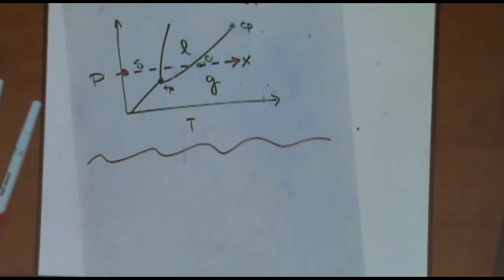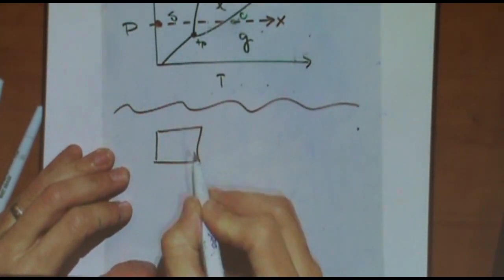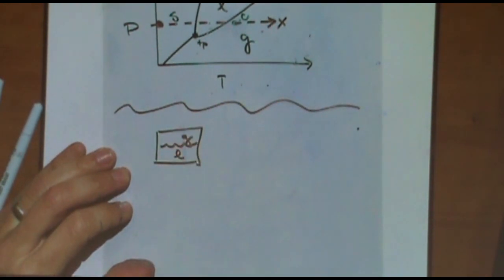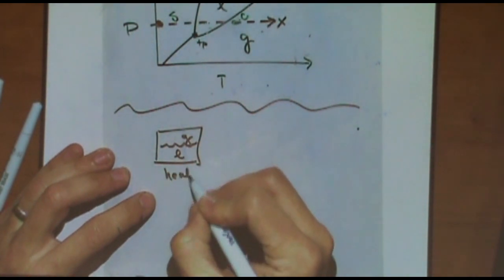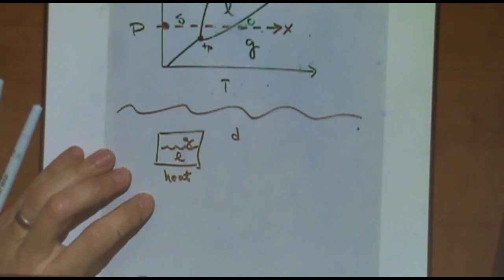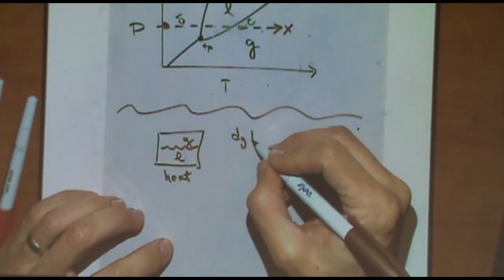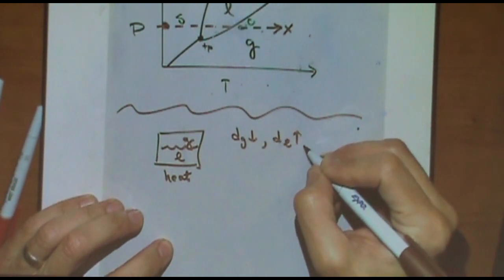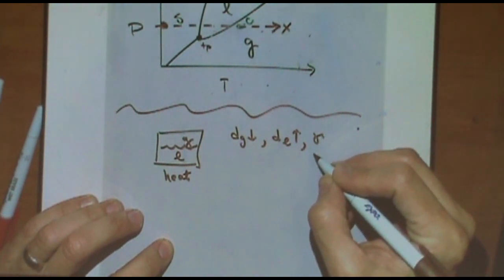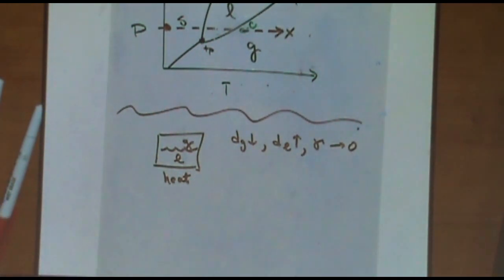What is the critical point? I think we'll do an example in class on Tuesday. Let's say you have a gas and a liquid and then you heat this. What's going to start to happen is the density, which is greater, density of gas or density of liquid? Liquid. So the density of gas is much less, but this will start to decrease. The density of the liquid will start to go up. And gamma, which is what I used to call the surface tension, will approach zero.